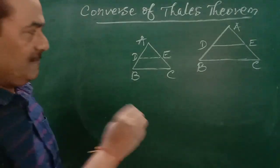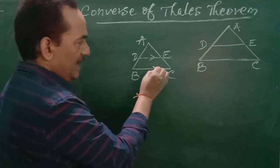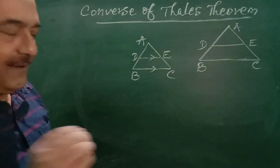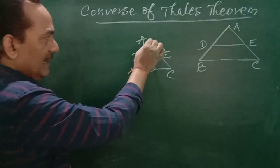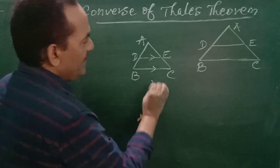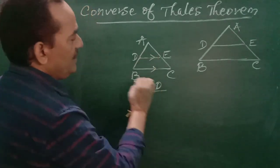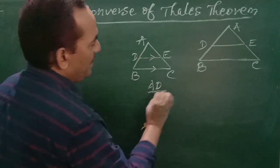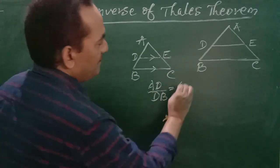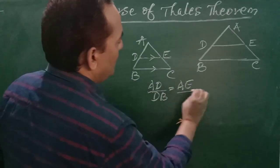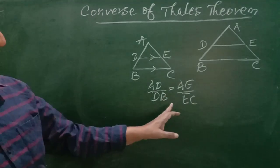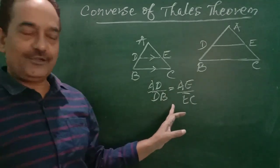Here it is given that DE is parallel to BC, and we have to prove that AD upon DB is equal to AE upon EC. This is the third theorem.